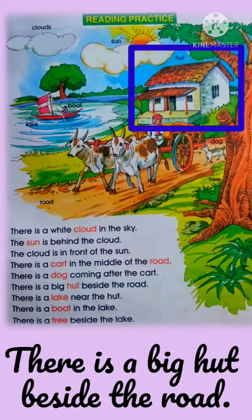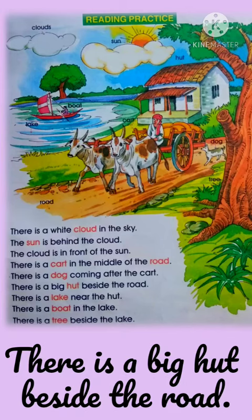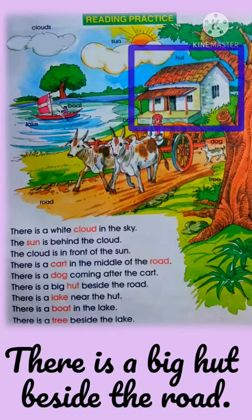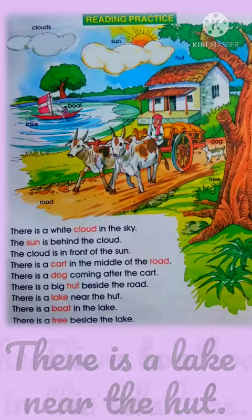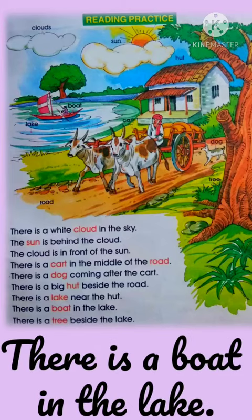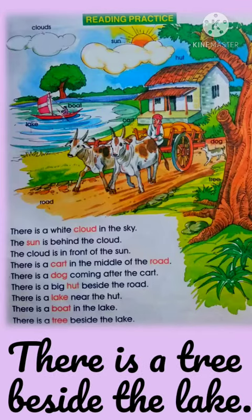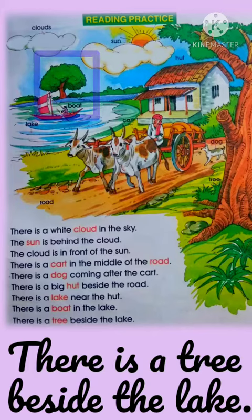There is a big hut beside the road. There is a lake near the hut. There is a boat in the lake. There is a tree beside the lake.